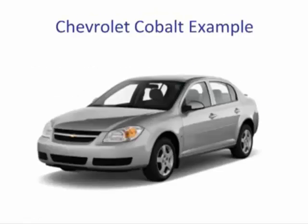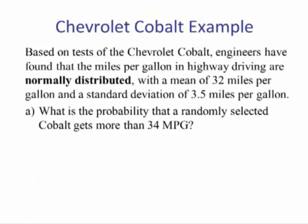Let's do an example. Based on tests of the Chevrolet Cobalt, engineers have found that the miles per gallon in highway driving are normally distributed with a mean of 32 miles per gallon and a standard deviation of 3.5 miles per gallon. Part A: What is the probability that a randomly selected Cobalt gets more than 34 miles per gallon?